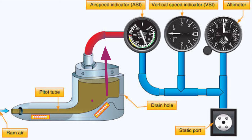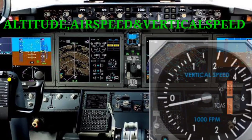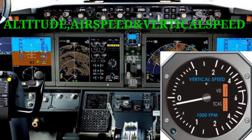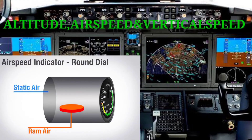The static section also contains a riser tube, and the air is run out of the Pitot assembly through a tube connected to the altimeter, airspeed indicator, and vertical speed indicator. With the help of this pressure, we can easily measure the altitude of the aircraft, as well as the vertical speed and airspeed of the aircraft.